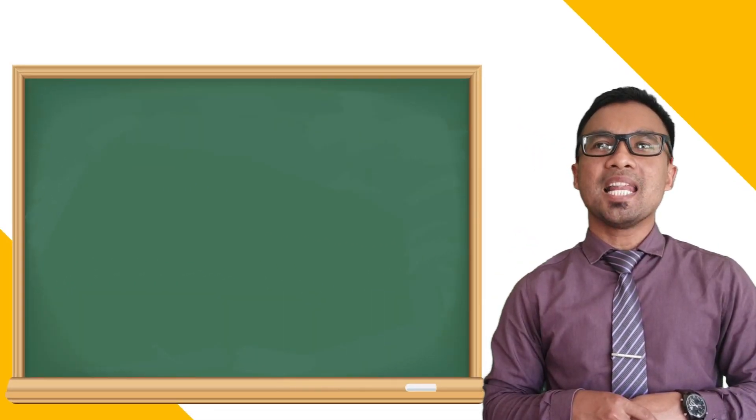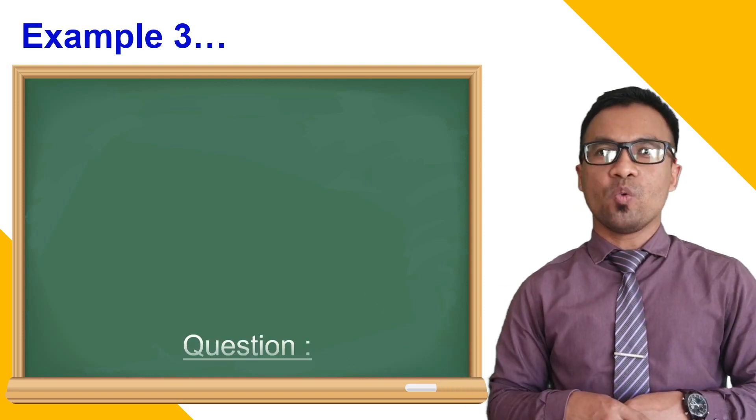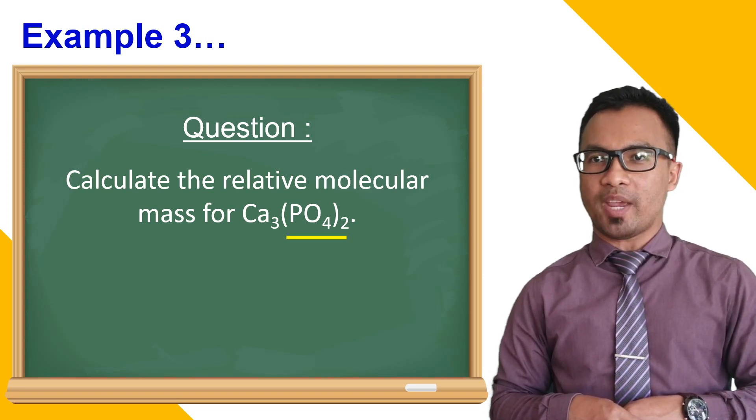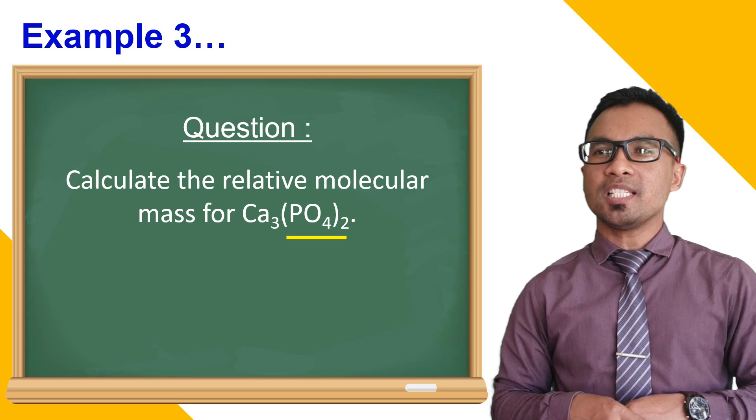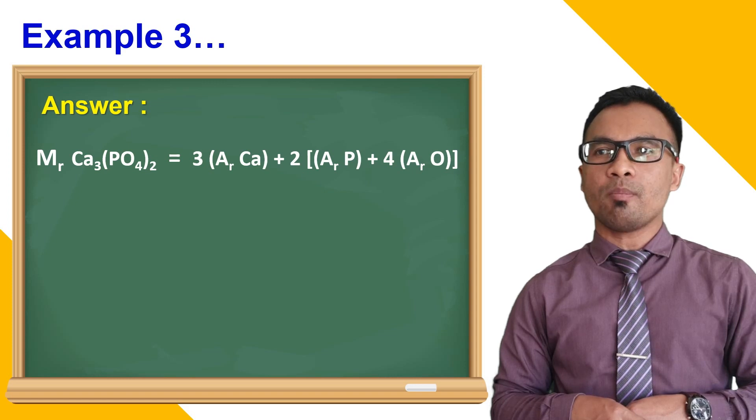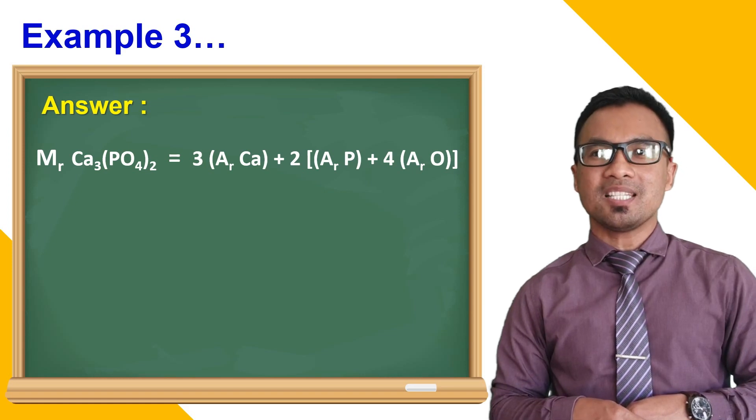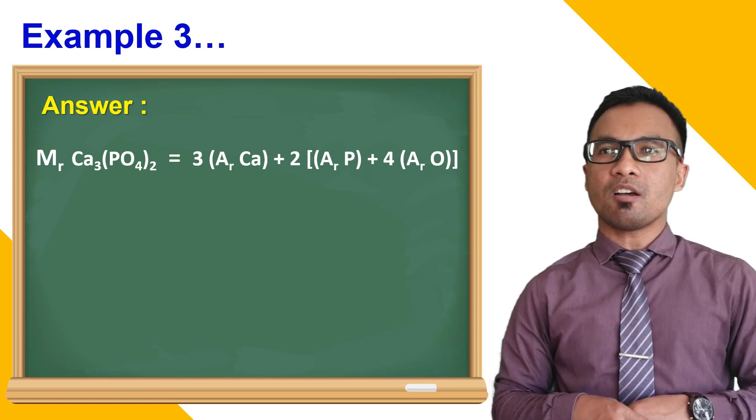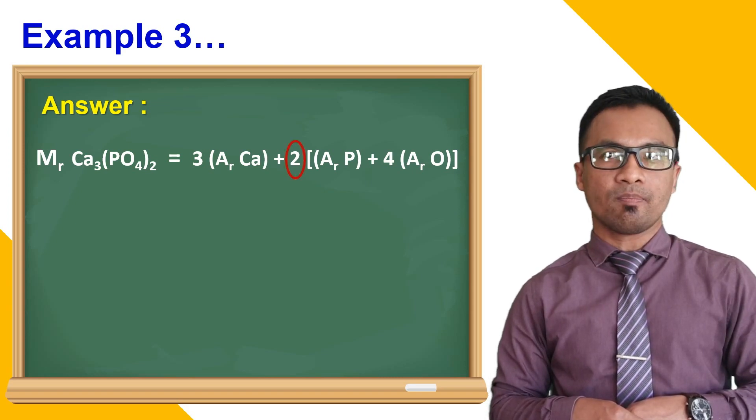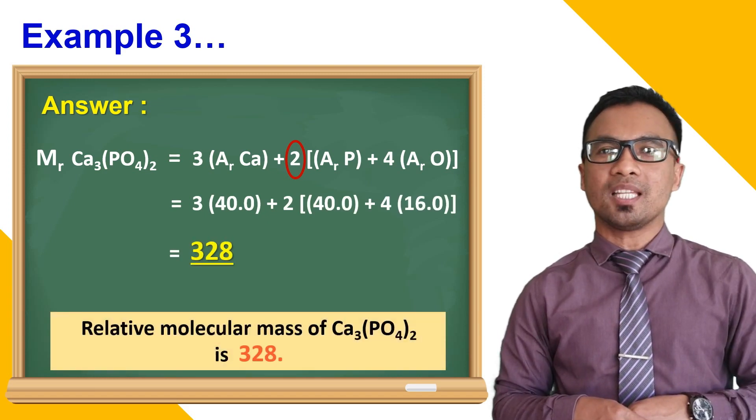Now, let's look at another example. Here, we have calcium phosphate. We have two phosphate ions in one molecule of calcium phosphate. So, when calculating the relative molecular mass, we need to sum up all relative atomic mass of the elements present in the molecule. This means that the relative mass of the phosphate ion needs to be multiplied by 2 as well. So, the relative mass for calcium phosphate is 328.